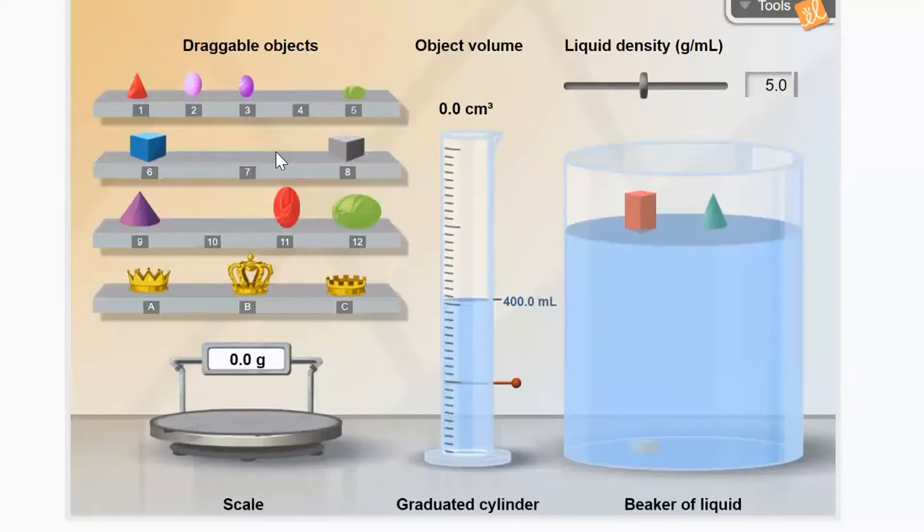And so Archimedes was able to test the various crowns that the king asked him to test. He figured out how to do it. And you're going to do something similar. I'm not going to say any more about that, except that this really did happen. And Archimedes really did figure out how to solve the king's problem and address his concerns. And you'll do something very similar. And so that's the task that you have before you, and I'm sure you'll be able to do it, but you need to do it in a timely fashion.